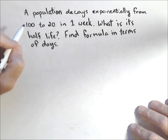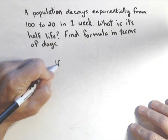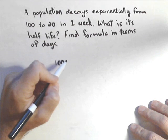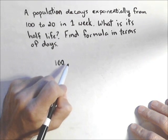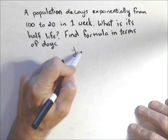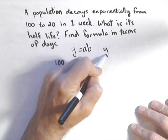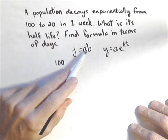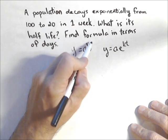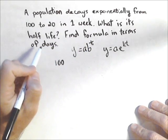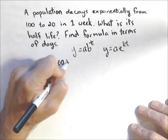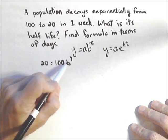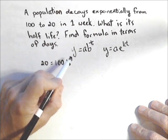One way to approach this: I can think of 100 as my initial value. There's going to be some rate of decay, and it doesn't matter which model you use — AB to the T, or AE to the KT. For this problem I'm going to use AB to the T. So I've got 100 times B to the seventh equals 20. This is going to find my rate of decay in seven days.